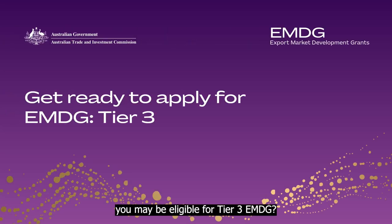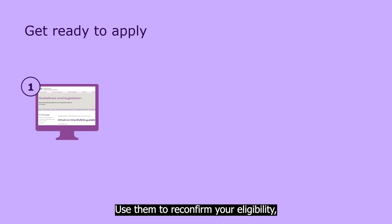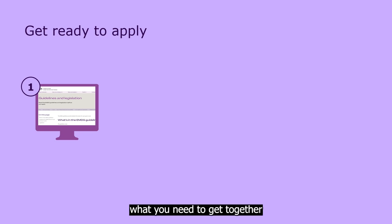Are you confident you may be eligible for Tier 3 EMDG? Here's what to do to get ready to apply. First step, read the grant guidelines. Use them to reconfirm your eligibility and to see, in writing, what you need to get together for your application.